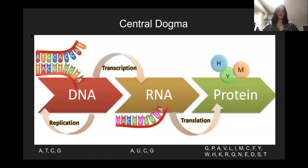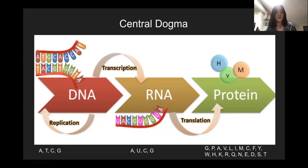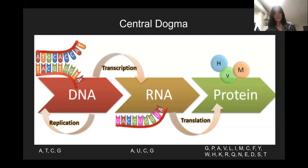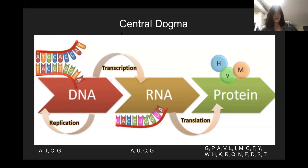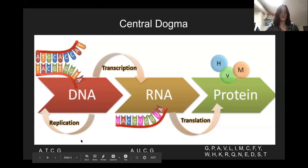Now I'm going to give an overview of genetics inside the cell and how proteins are made. This is called the central dogma of biology. If you took biology during high school, you'll know about it — it's really important. It basically describes the information flow from DNA all the way to proteins. You have DNA, double-stranded, written in the language of A, T, C, and G — the DNA bases.